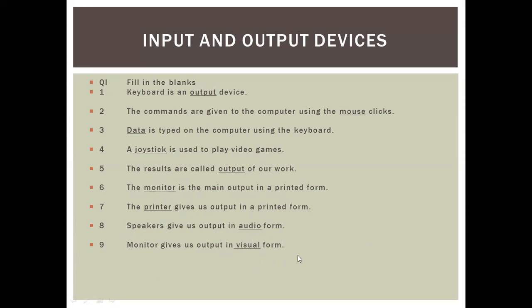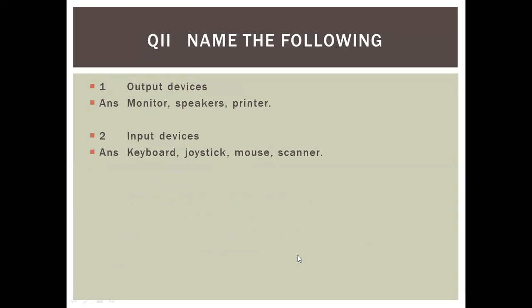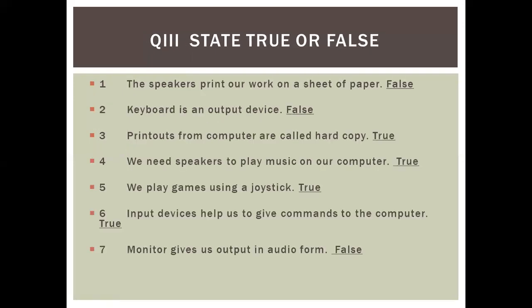After you finish, draw a line using a ruler. Your question two is: name the following. Number one — output devices: the answer is monitor, speaker, printer. Leave a line. Number two — input devices: the answer is keyboard, joystick, mouse, and scanner. Leave a line and draw a line.